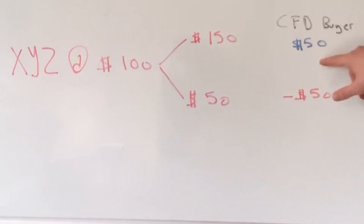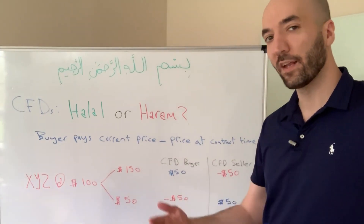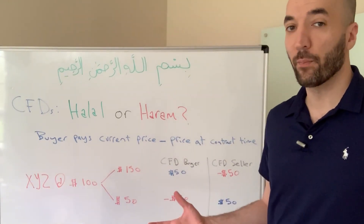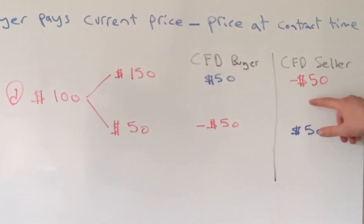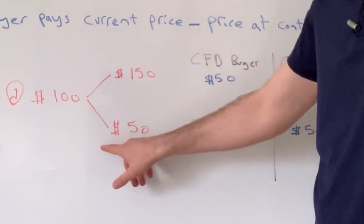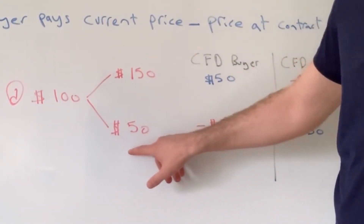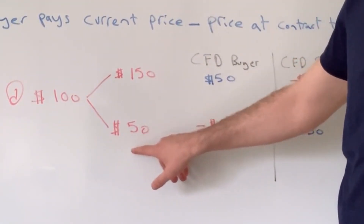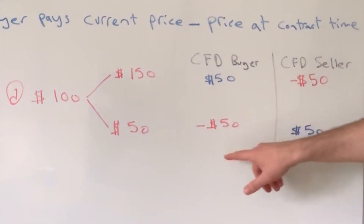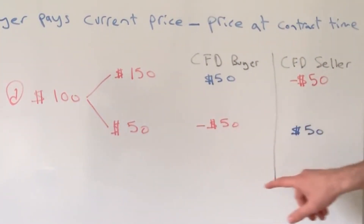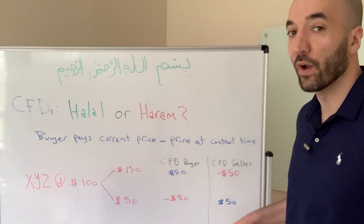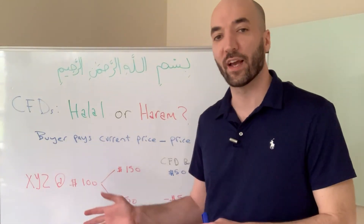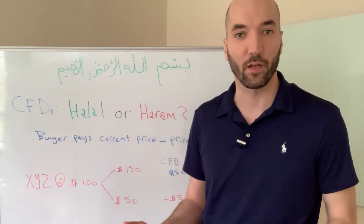So basically the buyer is owed $50 — they gain $50. And whatever the buyer earns, the seller loses, so the seller of the CFD will lose $50. On the flip side, if the price at settlement was $50 per share, then the buyer would lose $50 and the seller would gain $50. Whatever one side loses, the other side gains — there's a zero-sum game here.